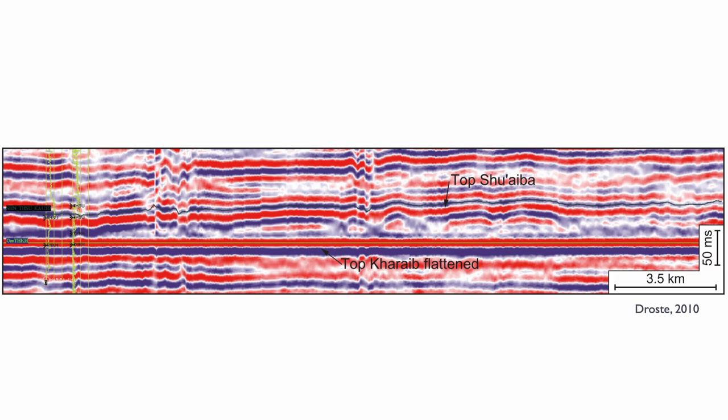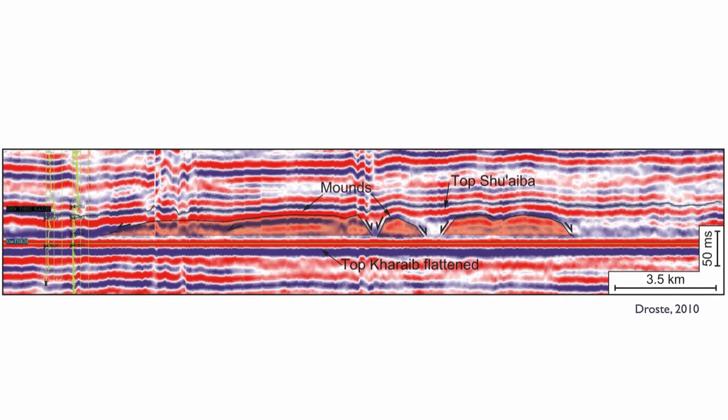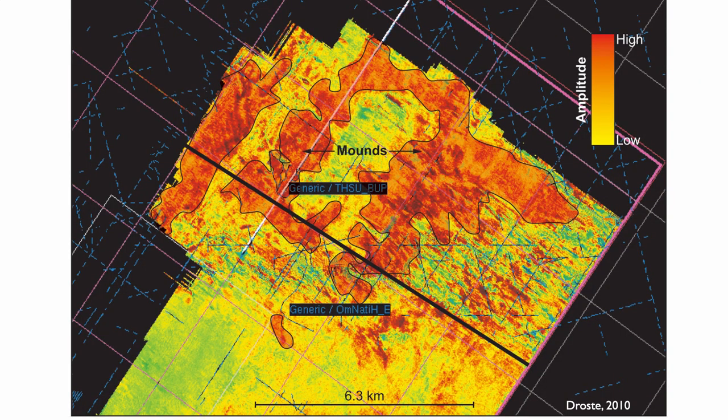More specifically, in the Schweiba formation during the TST, we see some very interesting things. We see evidence for mounded deposits. You can see here on this seismic line that there's evidence for mounds being formed. Those TST mounds can also be seen on a seismic amplitude map, and you can see the mound structure here in the subsurface of Oman.